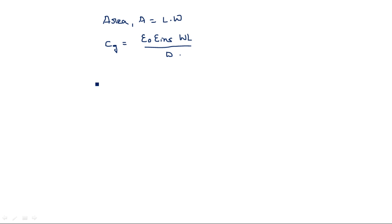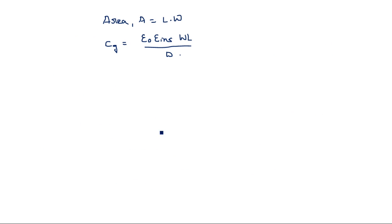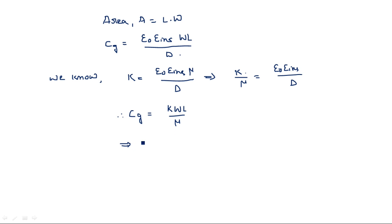How can we write CG in terms of k? Recall that k = epsilon_naught · epsilon_insulator · mu / d. From this relation, k/mu = epsilon_naught · epsilon_insulator / d. Substituting this into the CG expression: CG = k · W · L / mu. Therefore, k = CG · mu / (W · L). We will substitute this value of k into the IDS equation.